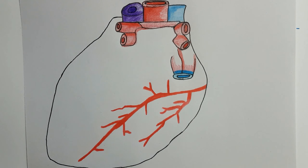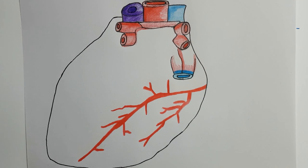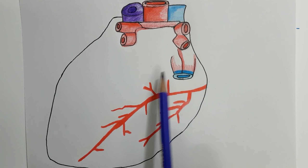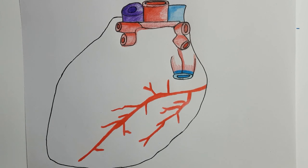After reaching the diaphragmatic surface, it lies in the right posterior coronary sulcus and finally reaches the posterior interventricular groove. It gets terminated by anastomizing with the circumflex branch of the left coronary artery at the crux of the heart. The crux is an area on the posterior side of the heart where the coronary sulcus meets with the posterior interventricular sulcus.